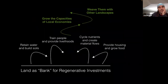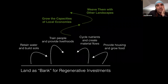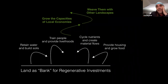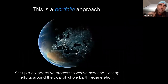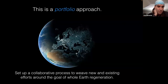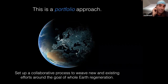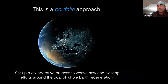The basic metaphor for what we're doing is thinking of the land or territory as a bank for regenerative investments. The land is what can retain water and build soils, train people and provide livelihoods, cycle nutrients and create material flows for the local economy and ecology, and provide housing and grow food for the people who live there. All of these things enable the land as a bank to grow the capacities of local economies and weave them with other landscapes. In short, this is a portfolio approach — gathering a collection of projects within a landscape or gathering landscapes to collaborate together, setting up collaborative processes to weave efforts around the goal of whole earth regeneration.